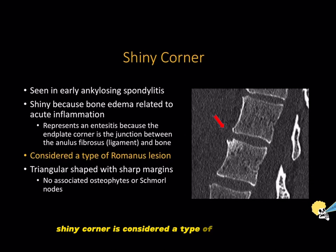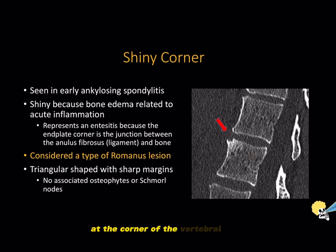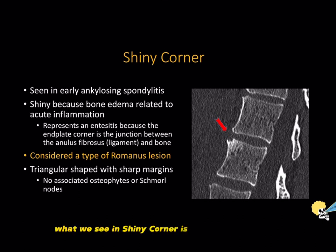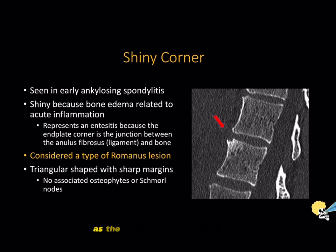The shiny corner is considered a type of Romanus lesion. The Romanus lesion is also seen in early ankylosing spondylitis and involves an erosion at the corner of the vertebral body. It is thought to precede the shiny corner — what we see in the shiny corner is thought to represent a reparative response to the Romanus lesion erosion, which is why we see edema and inflammation as the body tries to heal itself.